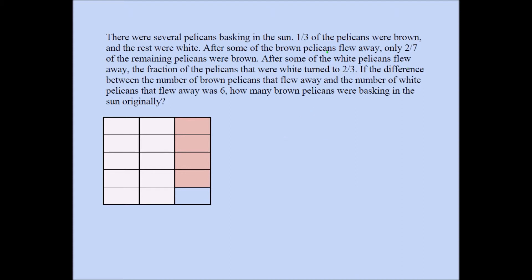Now some of the white pelicans are going to fly away. After some of the white pelicans flew away, the fraction of the pelicans that were white was two thirds. From that, I can infer one third of the remaining pelicans would be brown. And that tells me this brown portion must be one third of the remaining pelicans — this is a very important step. From that statement, I can infer this has to be one third of the remaining birds.